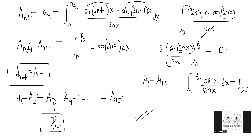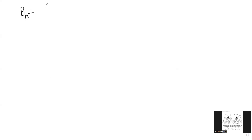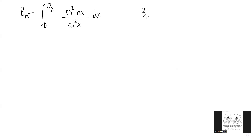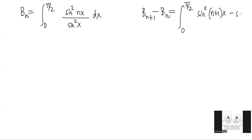Now for the second integral, we apply the same trick. bₙ = integral from 0 to π/2 of sin²(nx) divided by sin²(x) dx. We compute bₙ₊₁ minus bₙ, which becomes the integral from 0 to π/2 of [sin²((n+1)x) minus sin²(nx)] divided by sin²(x) dx.